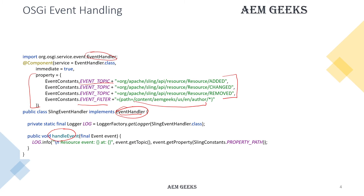To handle your event or perform your task, there is a method you have to implement when you implement this interface: handleEvent. Inside handleEvent, there is the event object I was talking about — this object is provided by the framework and will contain all information you need, like what kind of event it is. If you compare this with the previous JCR event listener, there we had an event iterator with a separate object for each event, but here we have a single object containing all information. That's why this handler is preferred over JCR APIs.